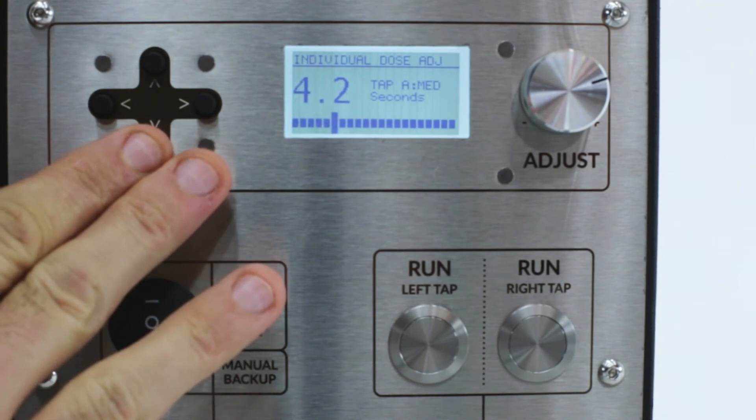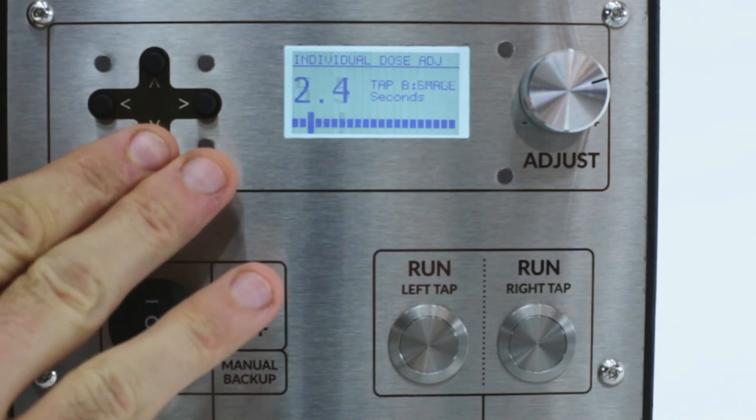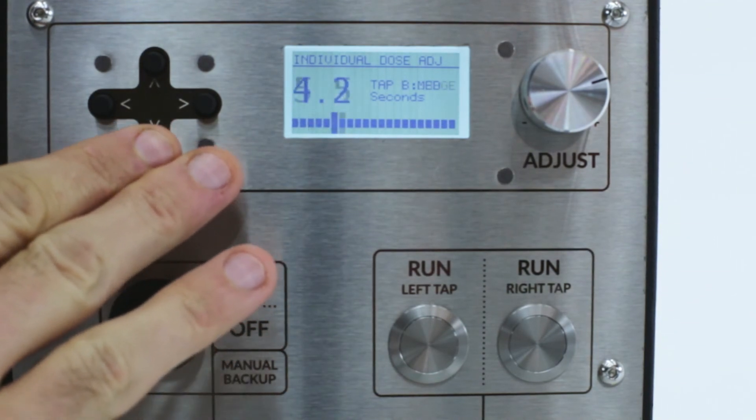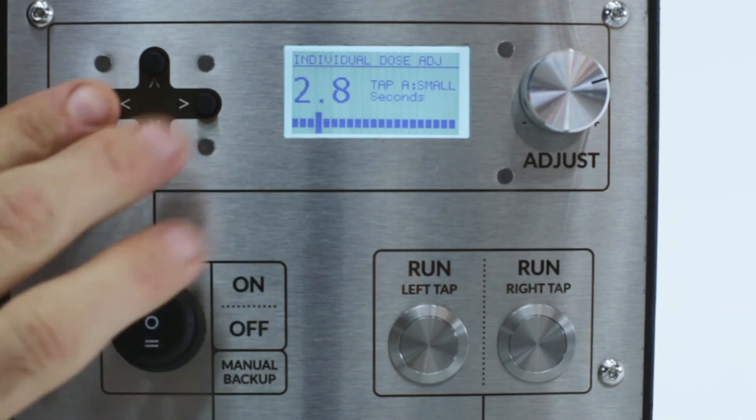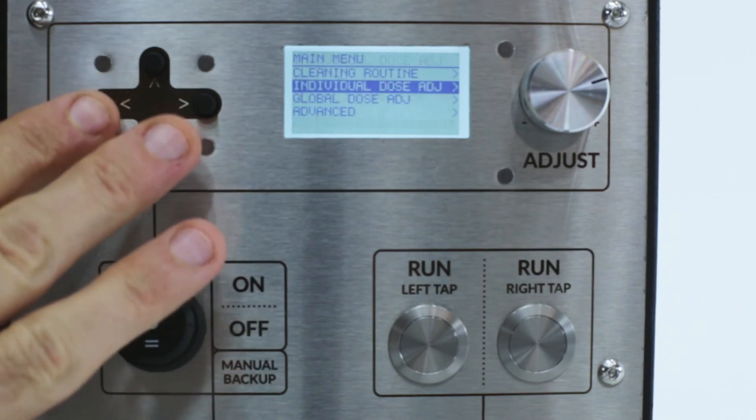Press the down arrow to move to medium and large doses for tap A, then down again to tap B: small, medium, and large. To save the changes, press the left arrow until you reach the home screen.